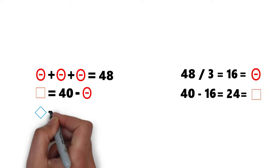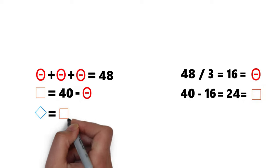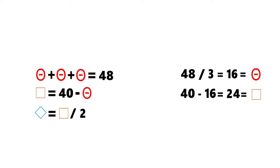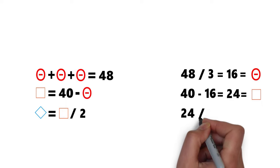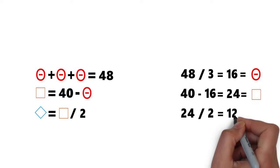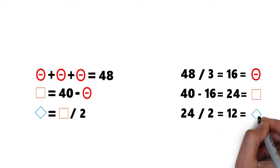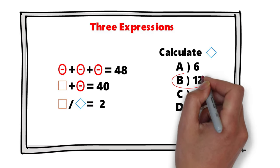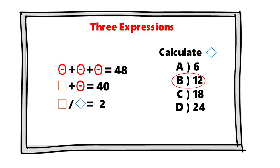Diamond equals square divided by 2, which is 24 divided by 2, equaling 12. So the correct answer is choice B: 12. Hopefully you've nailed this question and now know how to answer similar problems on the test.